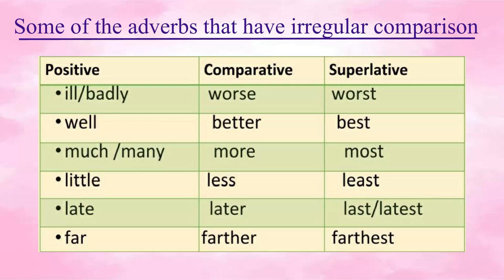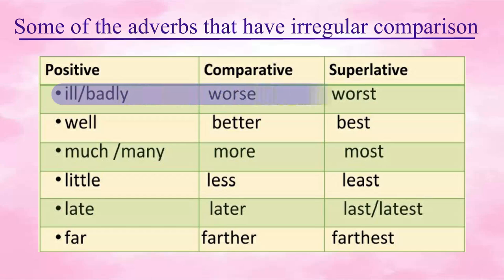Some adverbs exist in irregular forms. They don't take on the suffixes 'er' or 'est', nor do they need the words 'more' or 'most' — the comparative and superlative forms have totally different spellings. Ill or badly — worse — worst. Well — better — best.